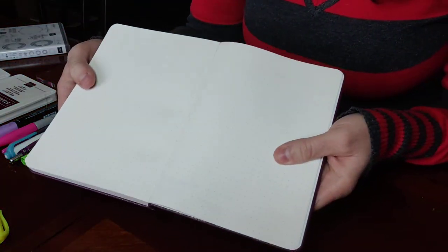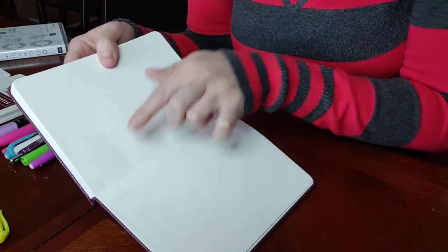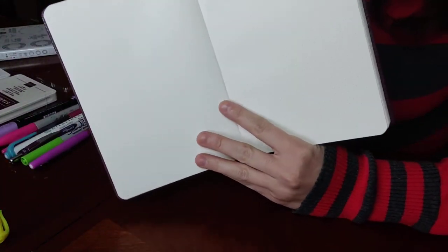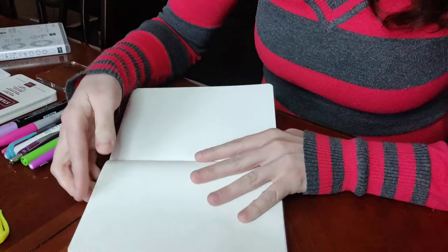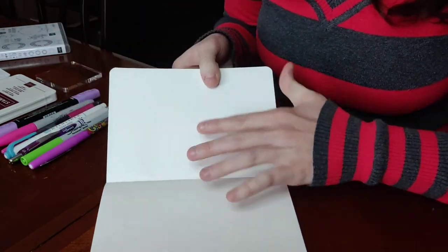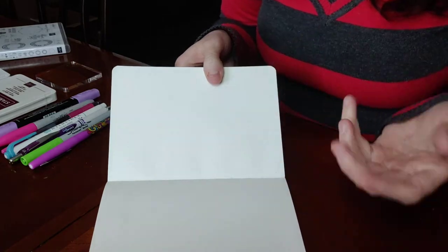There's no bleed-through on there. There is a little bit of ghosting. So what that means is you can see it when it's laying down and not under the direct light, there's a little bit where I wrote. I can't read it at all.